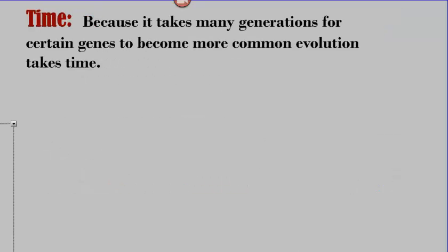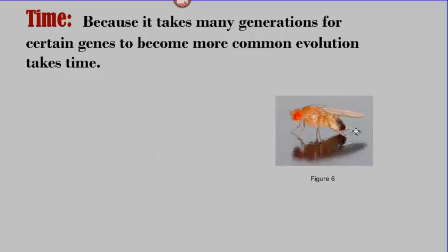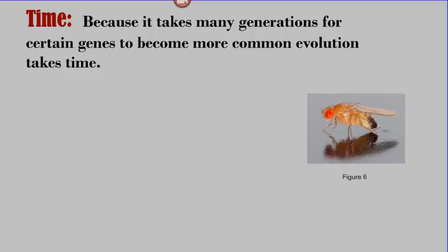The last point of the evolution equation is time. It takes many generations for genes to become more common in the population. Now time, from an evolutionary standpoint, is not just time passing. Time is not equal for all animals, or for all plants, or for all things that evolve, for all organisms that evolve. Time is different depending on how quickly your generations occur. So things like bacteria that can reproduce in a matter of hours, their generation time is fast, so the time that evolution takes is faster.